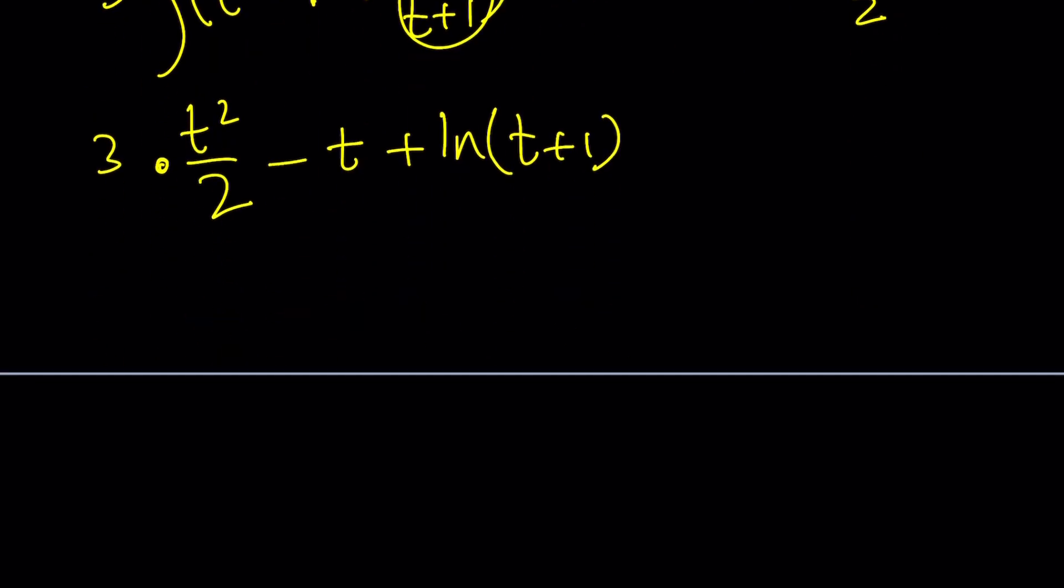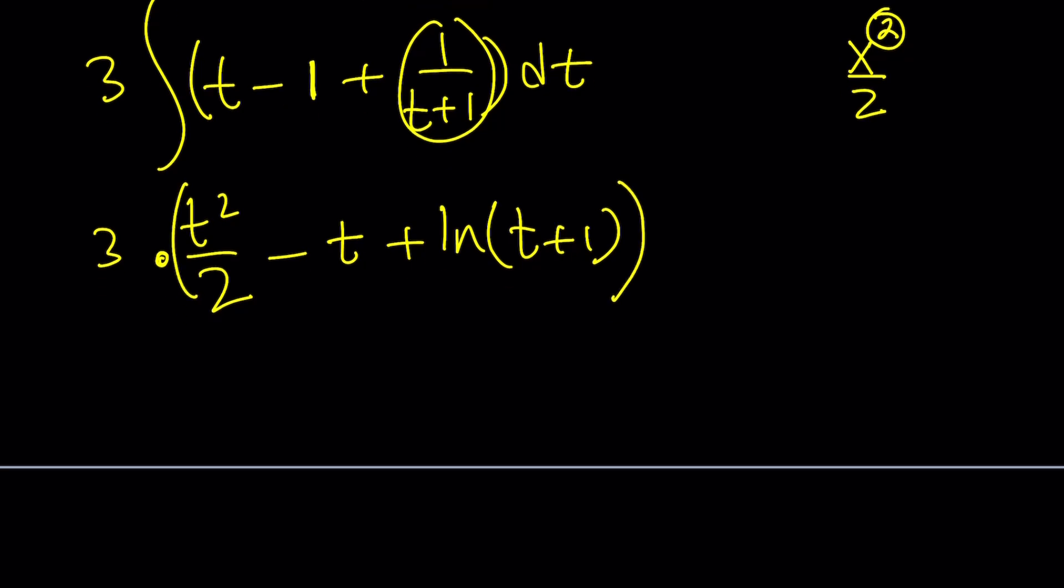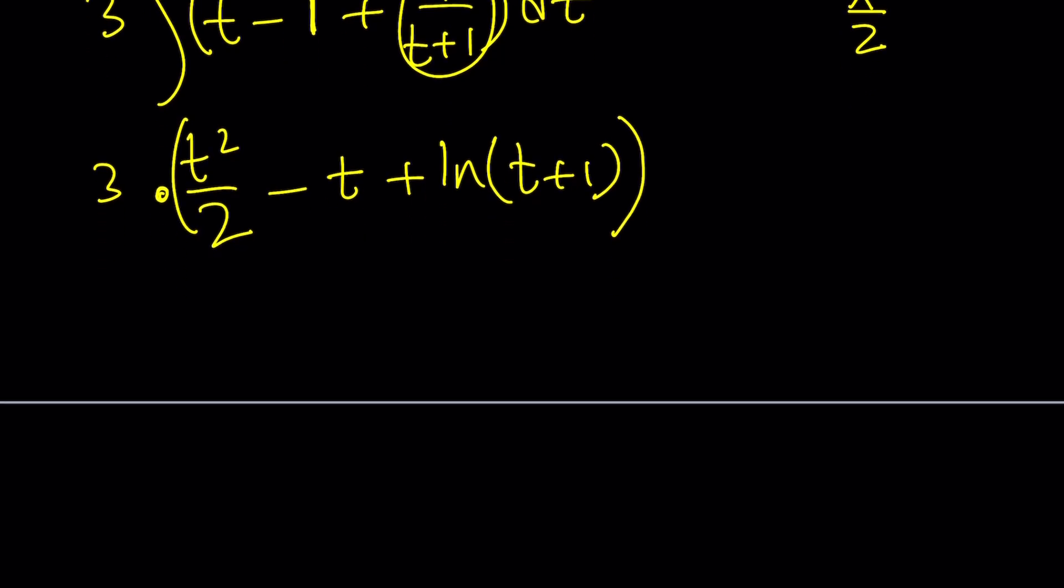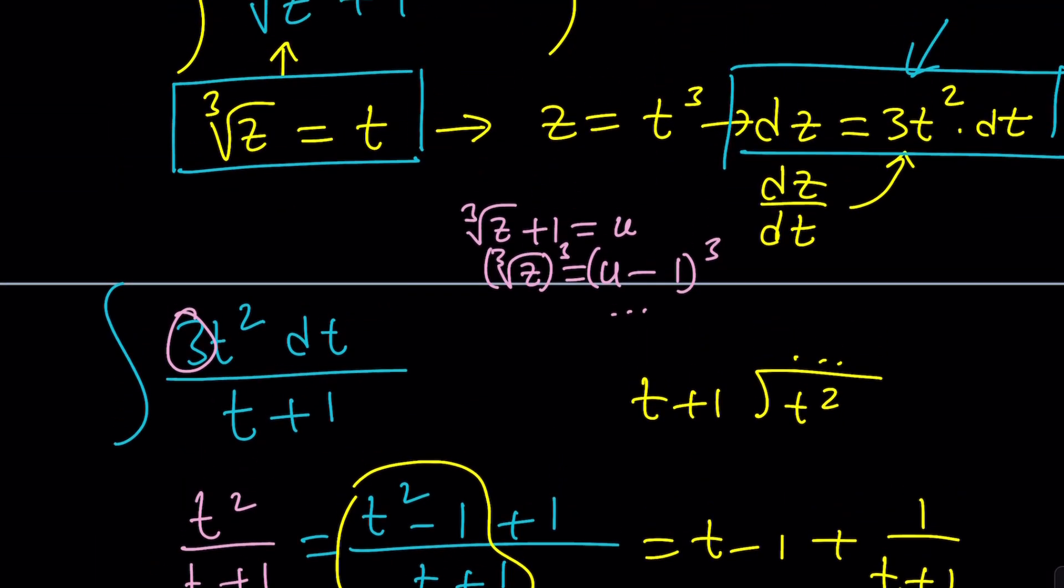Now, of course, 3 will be multiplied by everything. So I have to put all of these inside the parentheses. Make sure not to make any mistakes. Now, we're going to go ahead and back substitute. Let's go ahead and do it. What is t? t is the cube root of z.